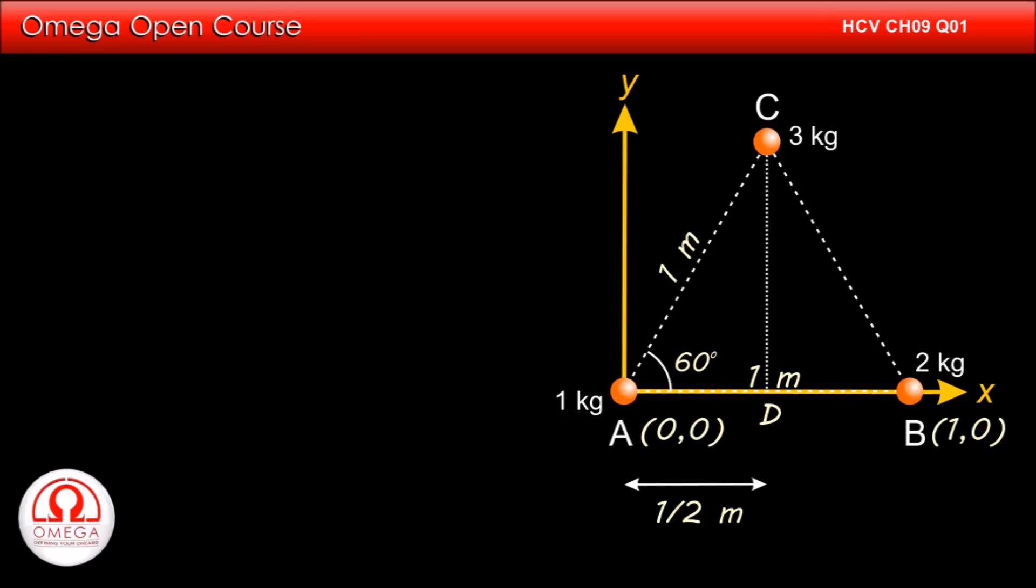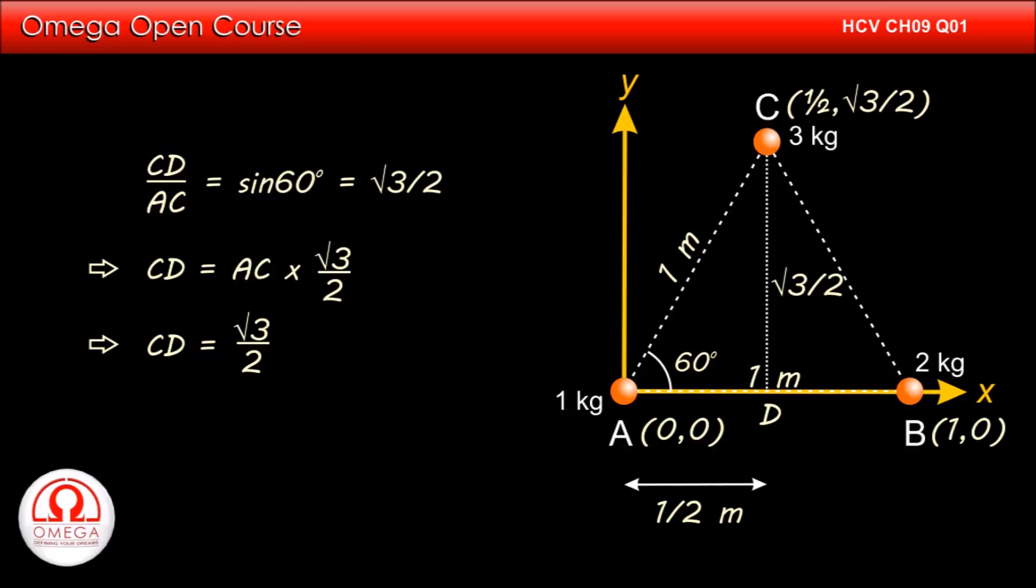Now in triangle ACD, CD is perpendicular and AC is hypotenuse. Therefore CD/AC must be equal to sin 60° or √3/2. This implies CD equals AC times √3/2, but AC equals 1 meter. Therefore CD equals √3/2 meters. Thus the coordinate of C is (1/2, √3/2).